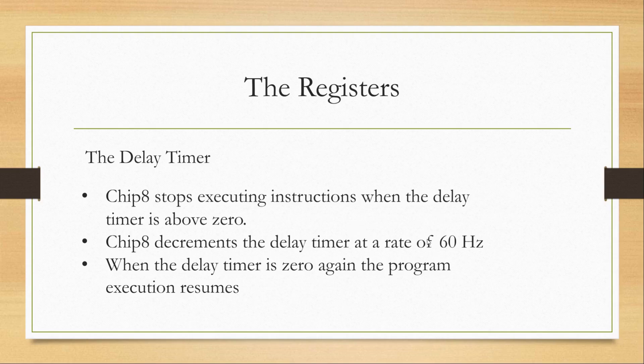The delay timer works similarly to the sound timer, except instead of playing a tune, it delays the program. The program stops executing instructions when the delay timer is above 0, and it decrements at a rate of 60 Hz. When the delay timer reaches 0 again, the program resumes execution. Think of it like pausing a game — everything stops — except it's based on a delay and not an action.